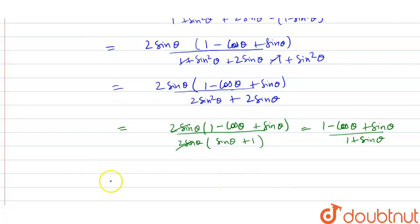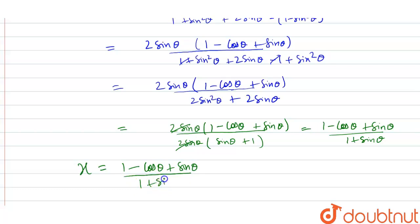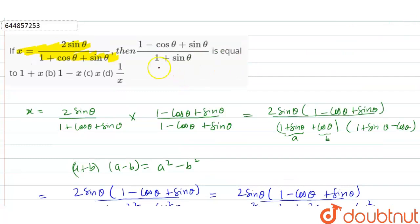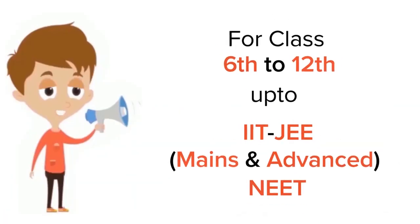So the value of x is: x is equal to 1 minus cos theta plus sin theta divided by 1 plus sin theta. So we will check the options, and the answer will be this option.